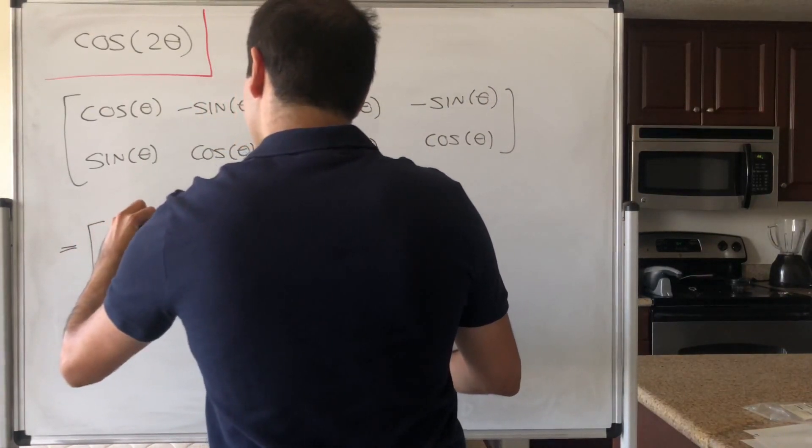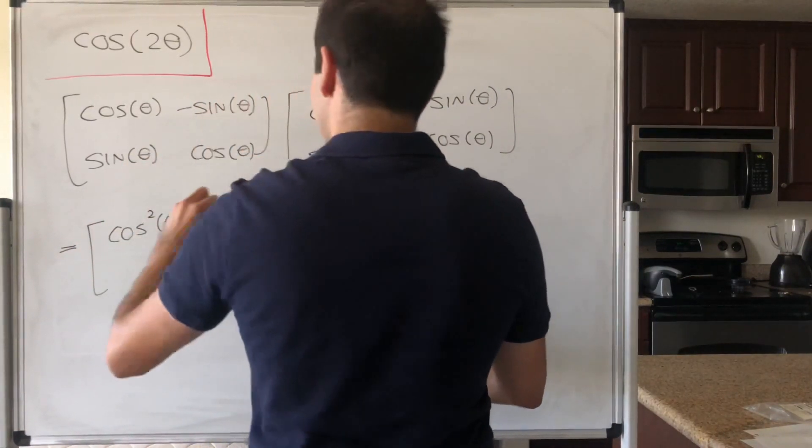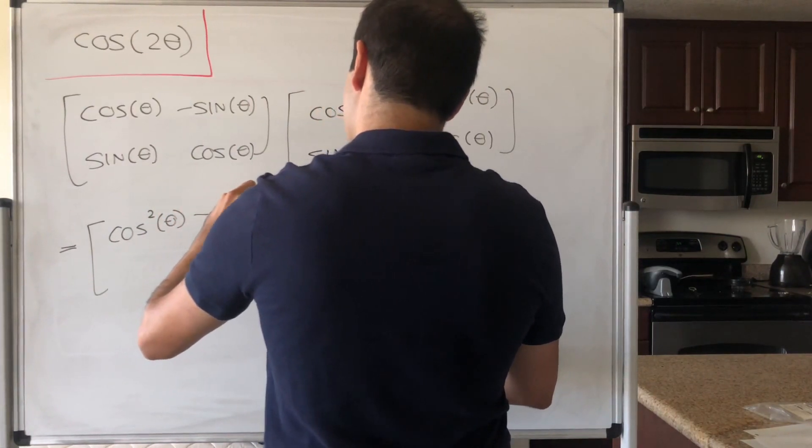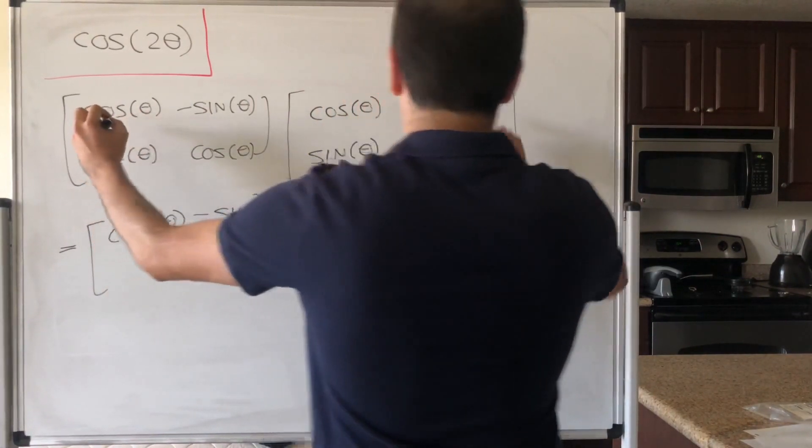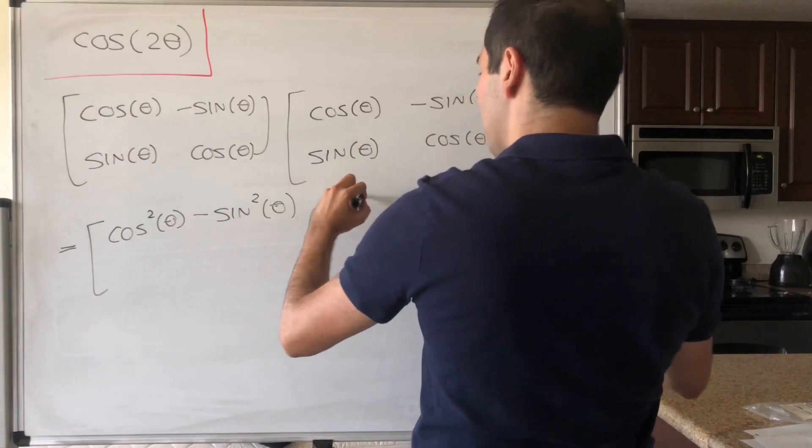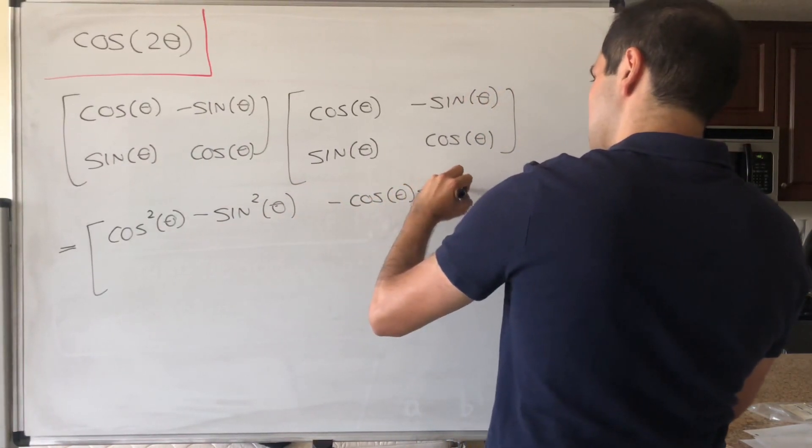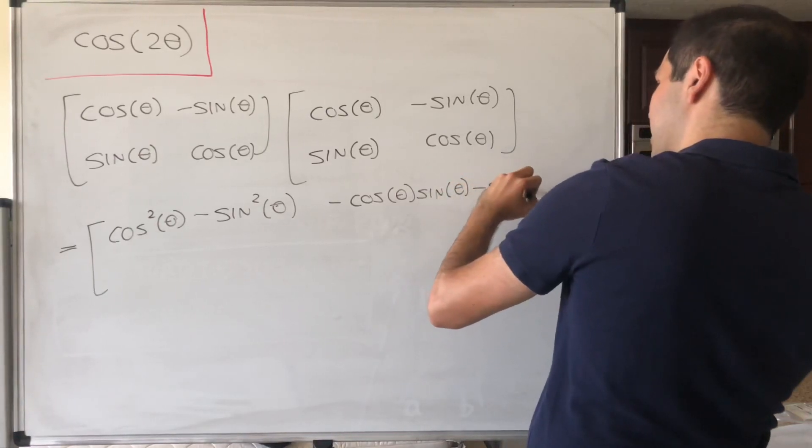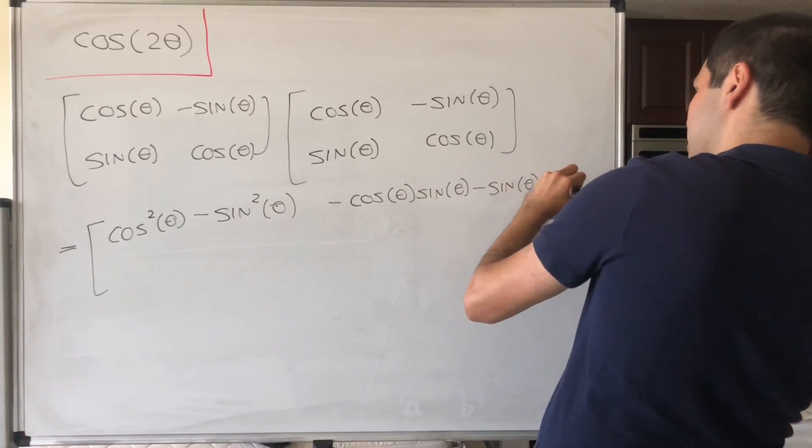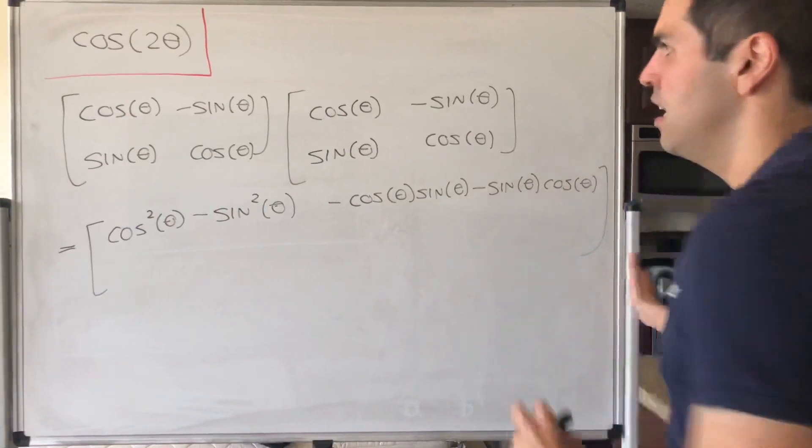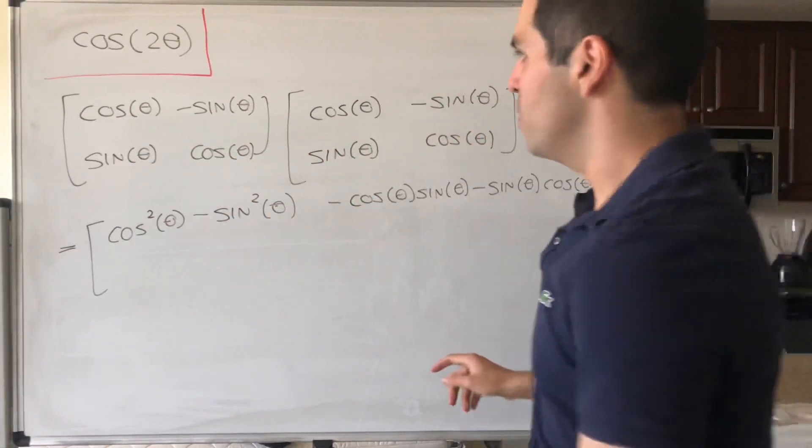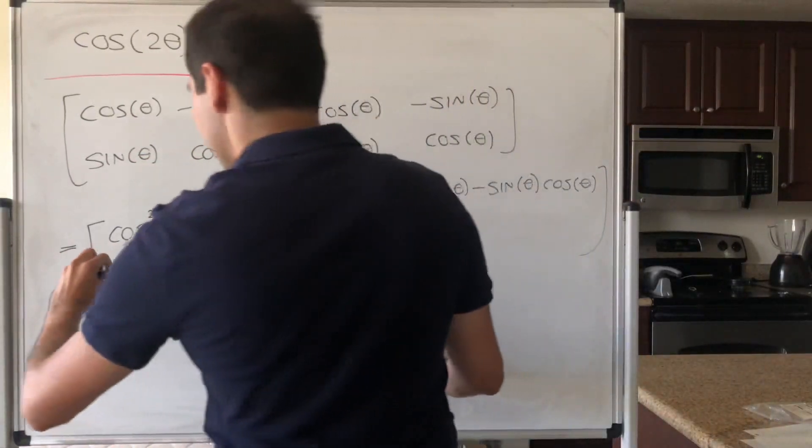So cosine squared of theta, minus sine of theta. And then minus cosine of theta, sine of theta, minus sine of theta, cosine of theta. And then sine of theta, cosine of theta, plus cosine of theta, sine of theta.